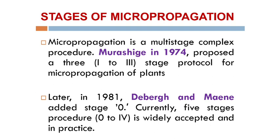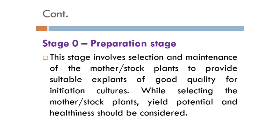Stage 0 is the preparation stage. This stage involves selection and maintenance of the mother or stock plants to provide suitable explants of good quality for initiation of cultures. While selecting the mother or stock plants, yield potential and healthiness should be considered. The mother plants should be very healthy. This preparation stage also includes preparation of the medium — most probably MS medium is used for all culture systems.